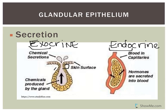We'll encounter more exocrine glands in AMP1; endocrine glands are covered in AMP2. Endocrine glands secrete hormones into your bloodstream. Think of exocrine glands like turning a faucet open — water spurts through a hose — while endocrine glands are more like a saturated sponge where water slowly oozes out.